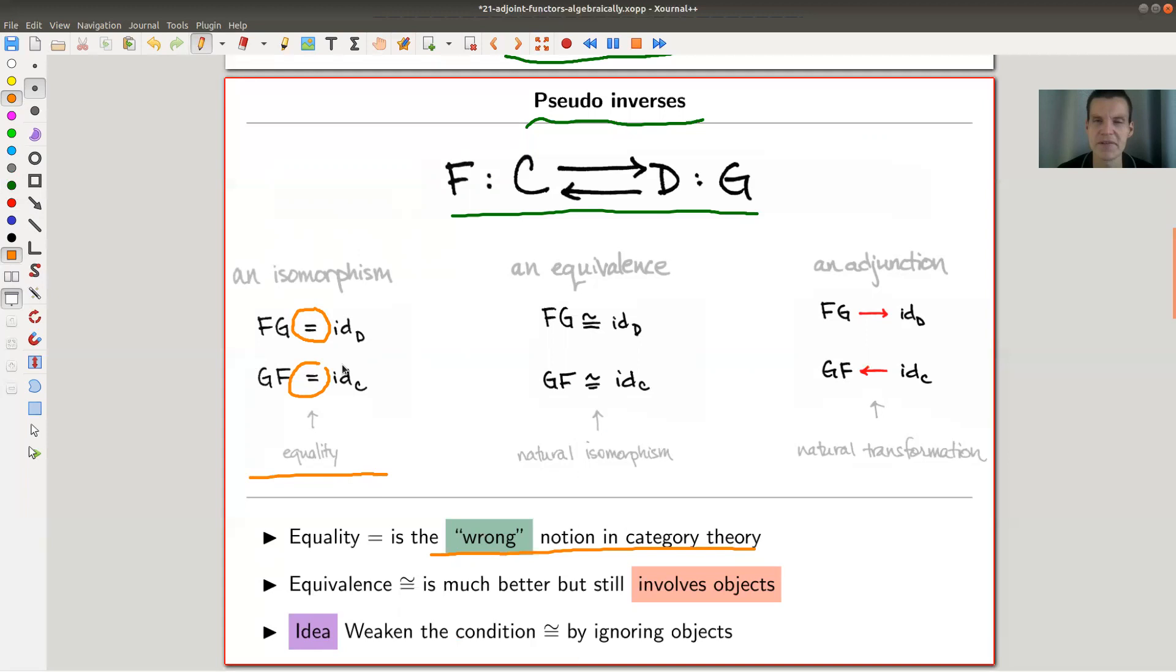The way to weaken that is to use equivalence. So instead of saying it's an isomorphism, you're saying it's equivalent, and then they're just equivalent of the factors, and it's much better. It's really much better.